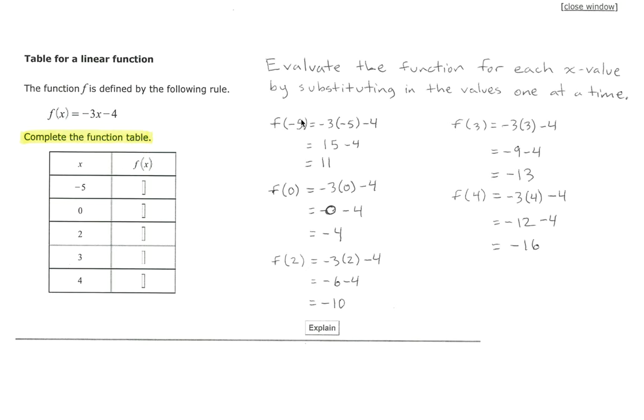Negative 5 we substitute where the x is, so we have f of negative 5 equals negative 3 times negative 5 minus 4. Simplify by using the order of operations, that means we multiply then subtract, so negative 3 times negative 5 is 15 minus the 4 is 11.